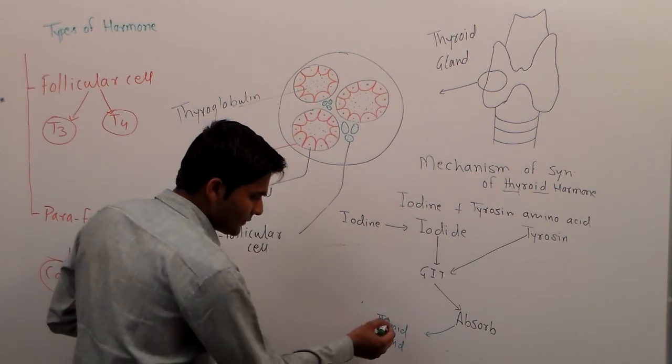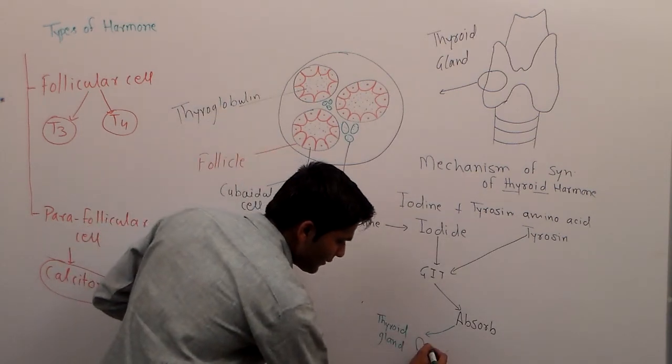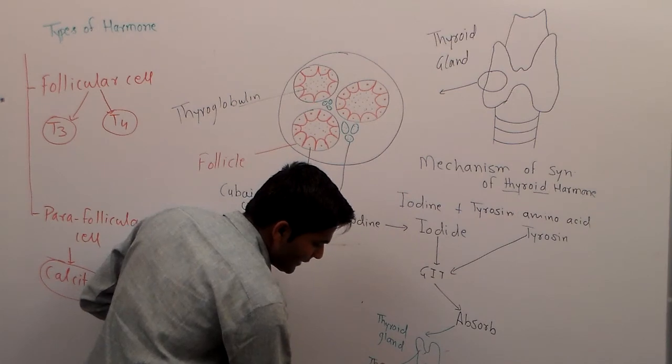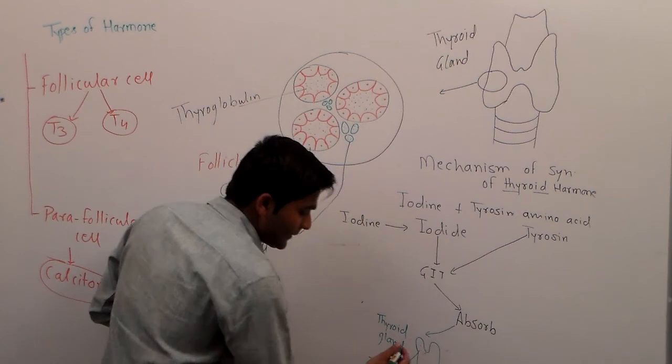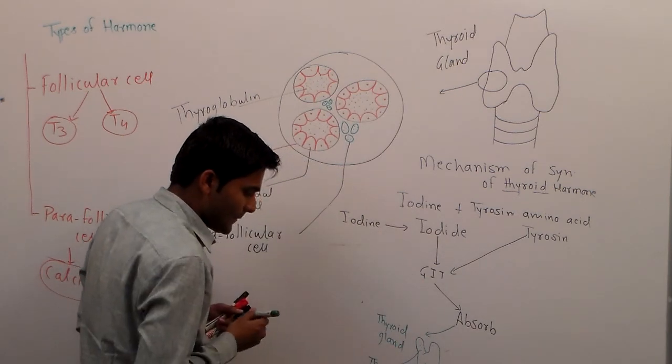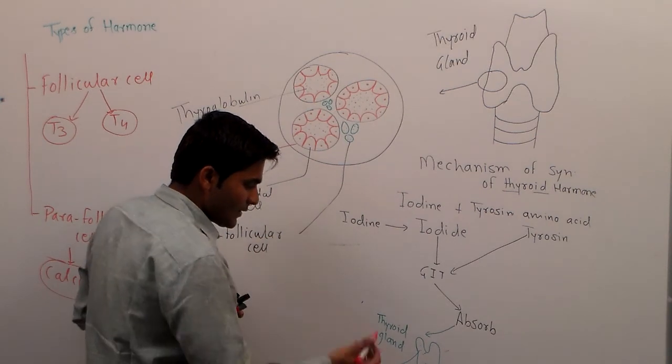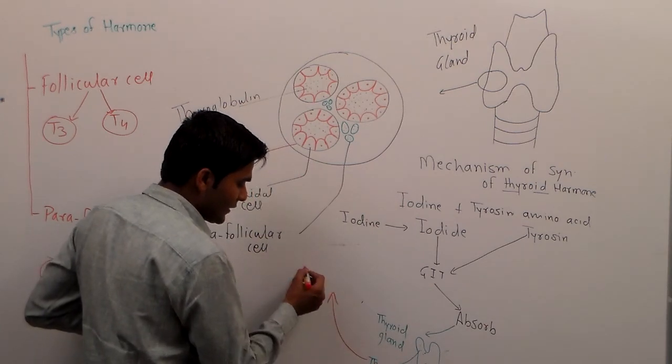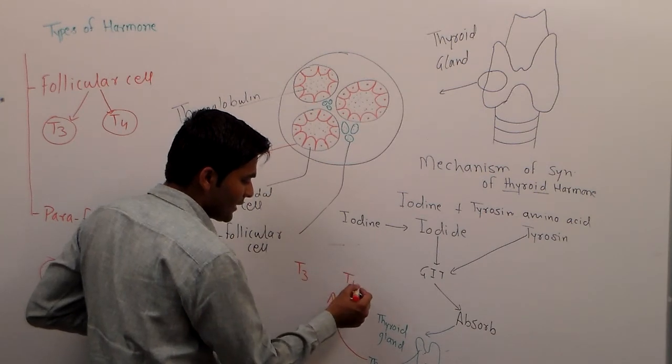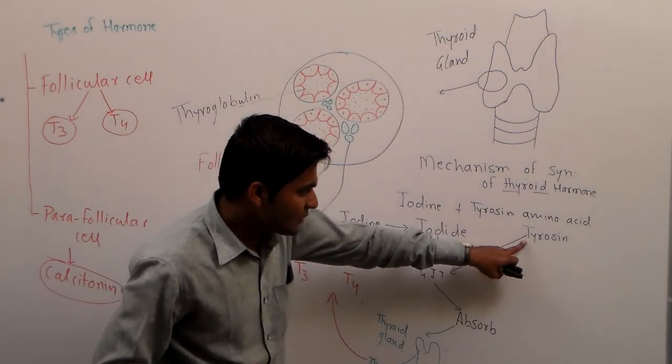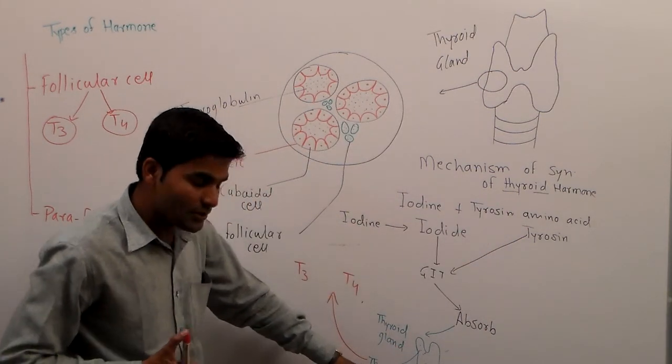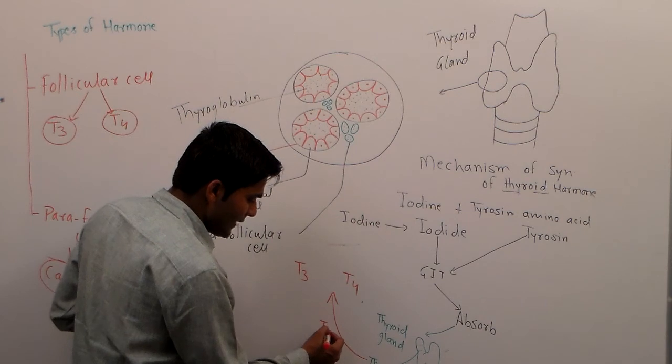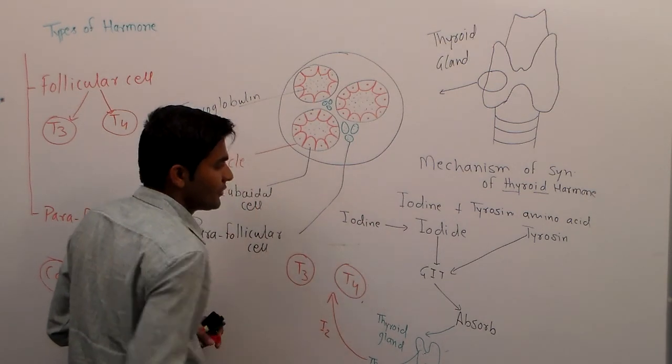In thyroid gland, which is already filled with thyroglobulin. The thyroglobulin bind with iodine and it will form triiodothyronine. Thyroglobulin bind with iodine and it will form T3 and T4.